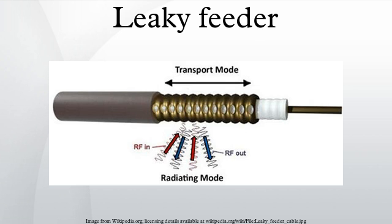Because of this leakage of signal, line amplifiers are required to be inserted at regular intervals, typically every 350 to 500 meters, to boost the signal back up to acceptable levels. The signal is usually picked up by portable transceivers carried by personnel. Transmissions from the transceivers are picked up by the feeder and carried to other parts of the tunnel, allowing two-way radio communication throughout the tunnel system.